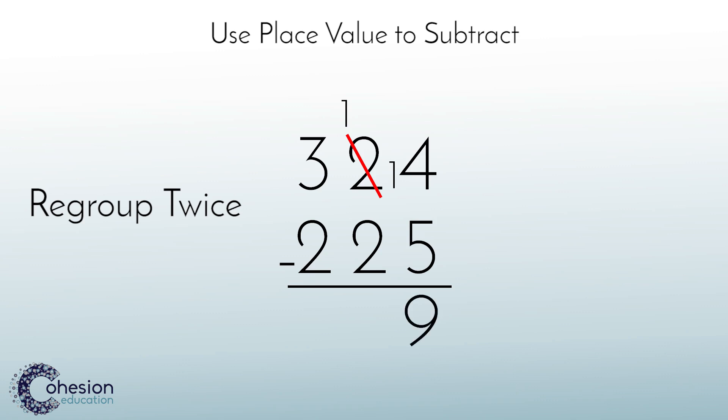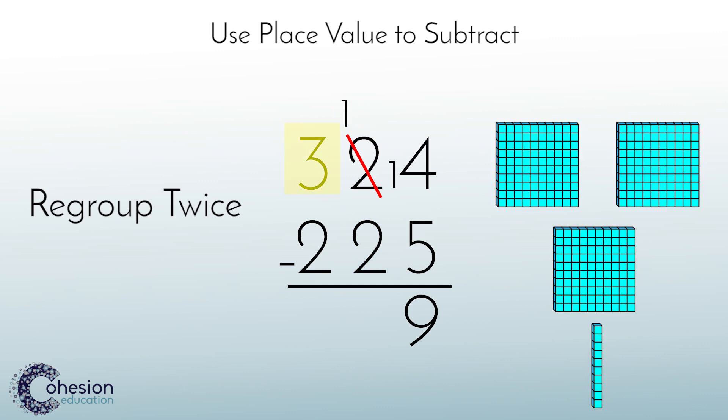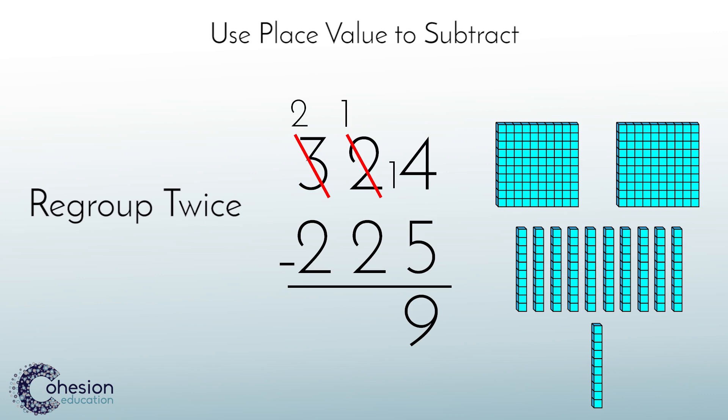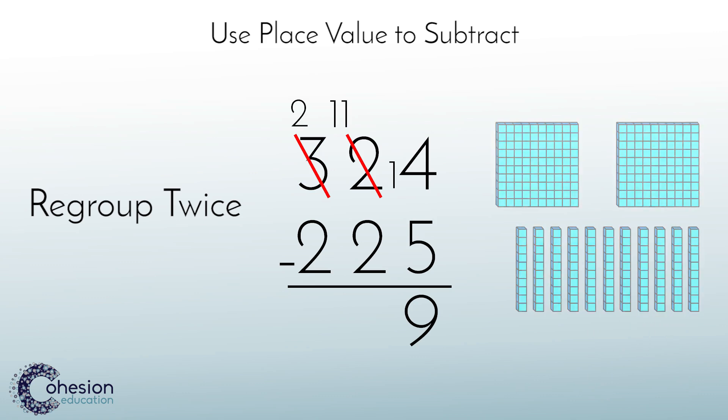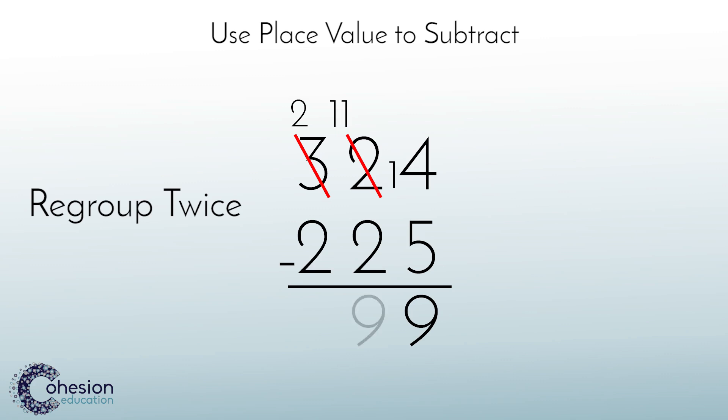Now, because we regrouped one of the tens already, we only have one left, and we can't subtract two from one. So, just as we did when this was the case in the ones place, we regroup from the next highest place value. Here, that would be the hundreds place. We regroup one hundred, leaving us with two hundreds, and the one hundred we regrouped turns into ten tens to go with the one ten we already have, giving us eleven tens. Eleven minus two equals nine, and in the hundreds place, two minus two equals zero. So, 324 minus 225 equals 99.